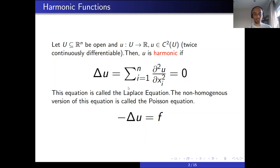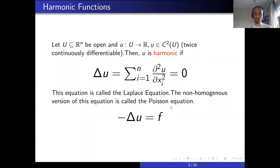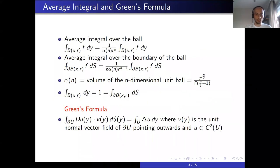This equation in total is called the Laplace equation, and there is a non-homogeneous version of this equation which is called the Poisson equation. Now, before proving the mean value property, we will introduce some preliminary information.